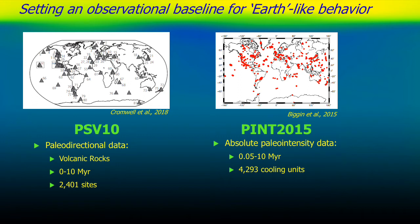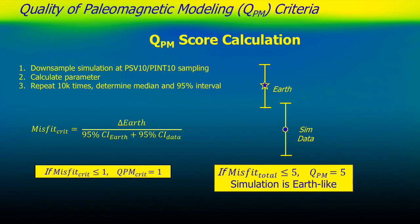Having established our criteria, we needed a baseline for what Earth-like means from observations. We chose two datasets: the PSV10 dataset from the compilation by Cromwell and others, and the PINT dataset. Both span the last 10 million years, look primarily at volcanic units, and have fairly good global and temporal coverage — though most of the data comes from the last 5 million years and much of it from the Brunhes. We think this represents enough data to give us a good sense of what the time-averaged field was doing for the last 10 million years.